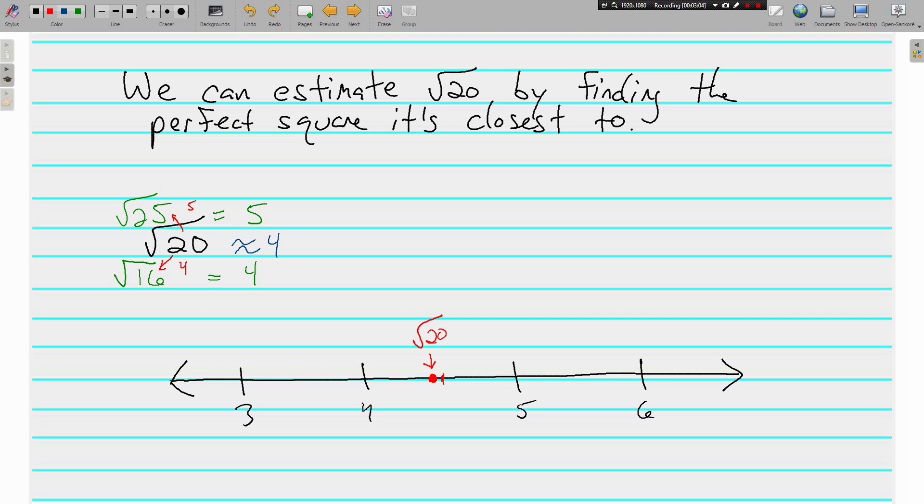slightly less than half for the square root of 20. Does that make sense? It's between 4 and 5, but it's a little bit closer to 4 than it is to 5, so it's going to go on 4's half of the number line.